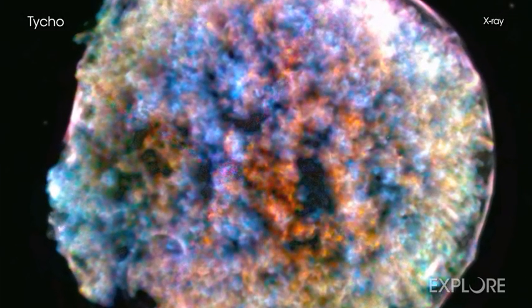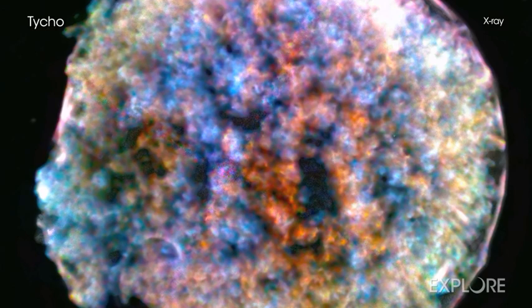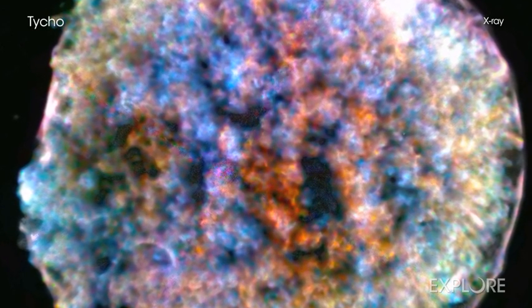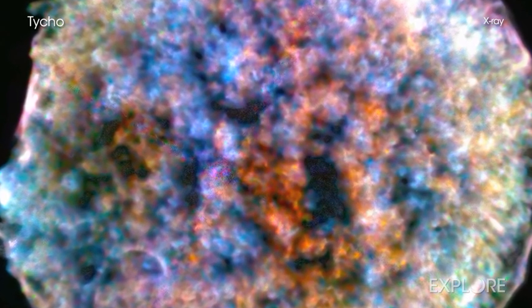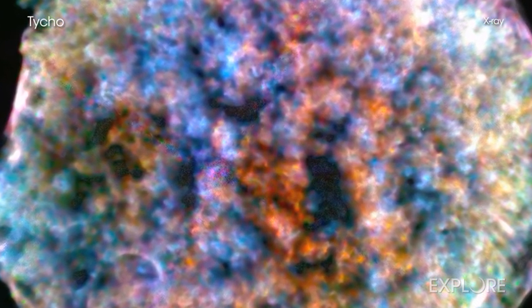By comparing the Chandra image of Tycho to two different computer simulations, researchers were able to test their theoretical ideas against actual data. They found that it's most likely that the clumps came from the explosion itself.